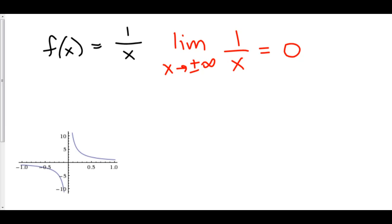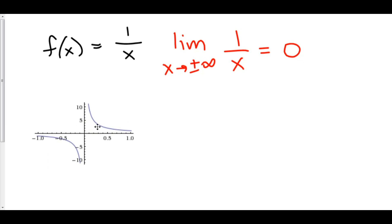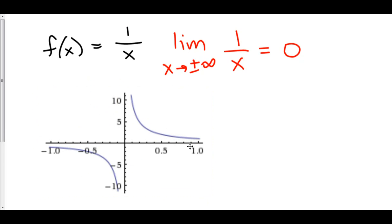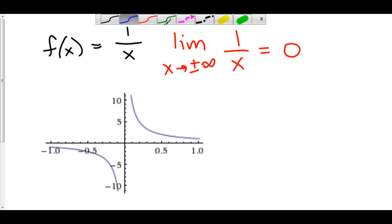Let's take a look at what this looks like. I've graphed this on Wolfram Alpha. We can see that as x goes to infinity, our function is approaching zero. And as x goes to negative infinity, our function is still approaching zero but from the negative side, as we noted. So our horizontal asymptote is y equals zero.